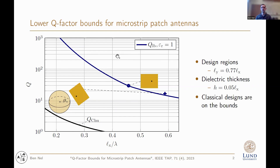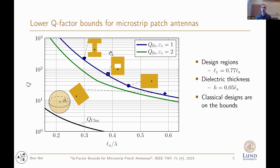Furthermore, we can see that the half-wavelength resonant patches for both polarizations are effectively on the bounds. When we look at some miniaturized patch geometries, we see that they are also effectively on top of the bounds. When we take a look at the bounds for relative permittivity of two, we again see that these geometries are on top of the bounds. It should be noted that the resonances shift with respect to the wavelength inside the substrate.